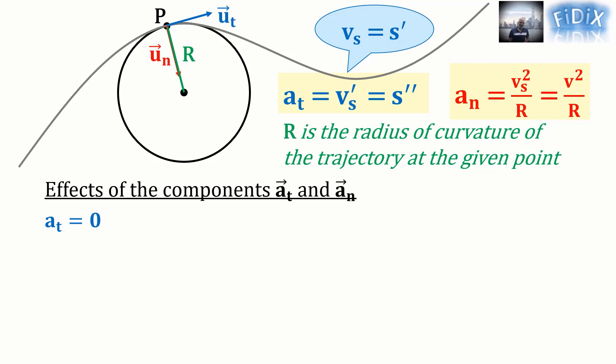If a_t = 0, the derivative of v_s is equal to 0. This leads to v_s being constant. But v_s is the algebraic value of the velocity, so when it is constant,